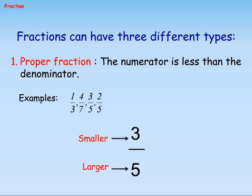Fractions can have three different types. Type one: Proper fraction — the numerator is less than the denominator. Examples: 1/3, 4/7, 3/5, 2/5. In 3/5, three is smaller and five is larger.